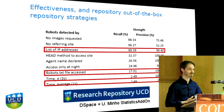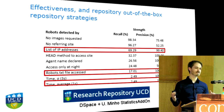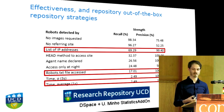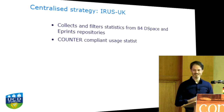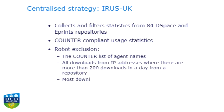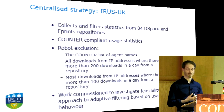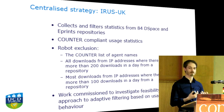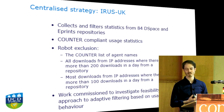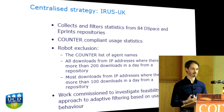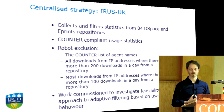One last solution is a centralized one: taking statistics from multiple repositories to a central system that can parse the logs and remove robots using a standardized method. The Iris UK project is doing exactly this — they have 84 different repositories in the UK and I've been in contact with them throughout this research. They work with Counter, and their goal is to produce Counter-compliant statistics for repositories. This means you can compare repositories to each other, compare repositories to versions of records, and compare repositories internationally in terms of usage.